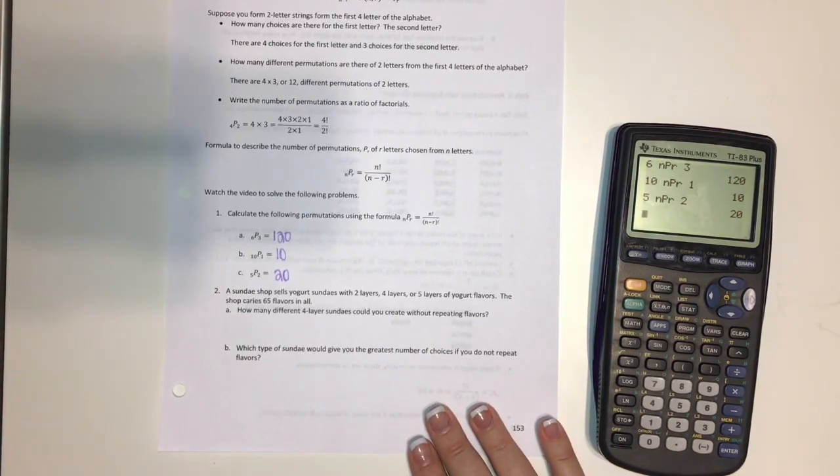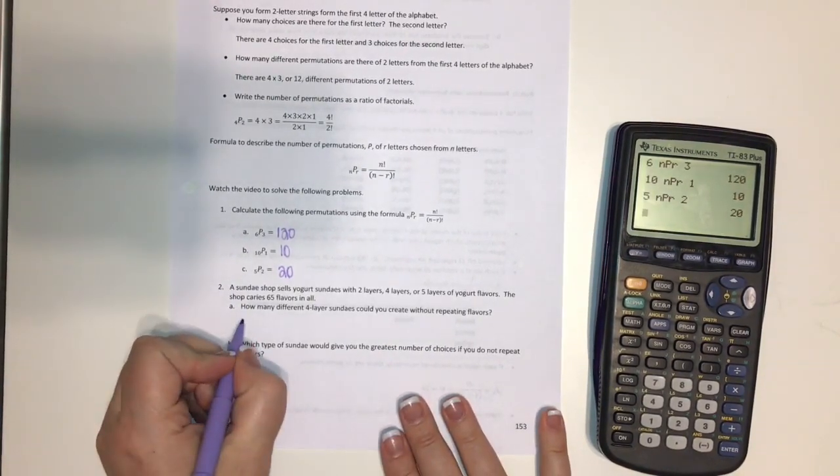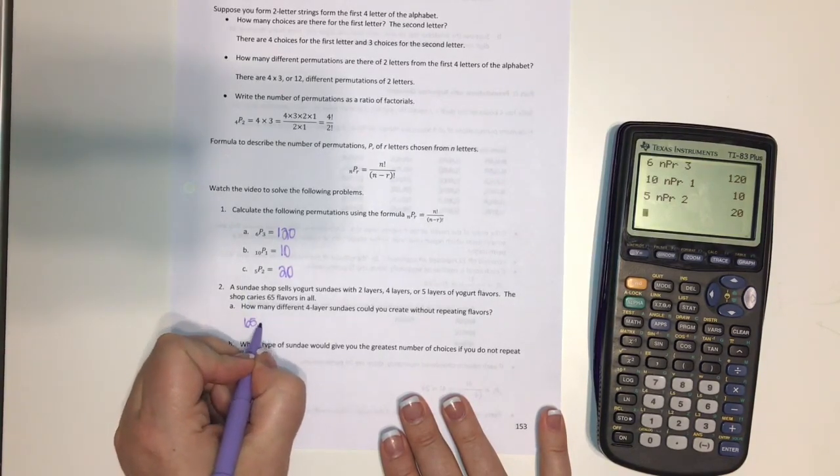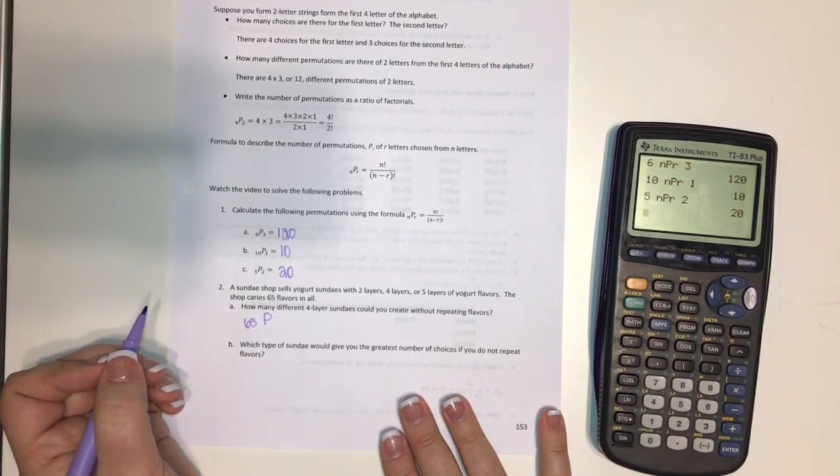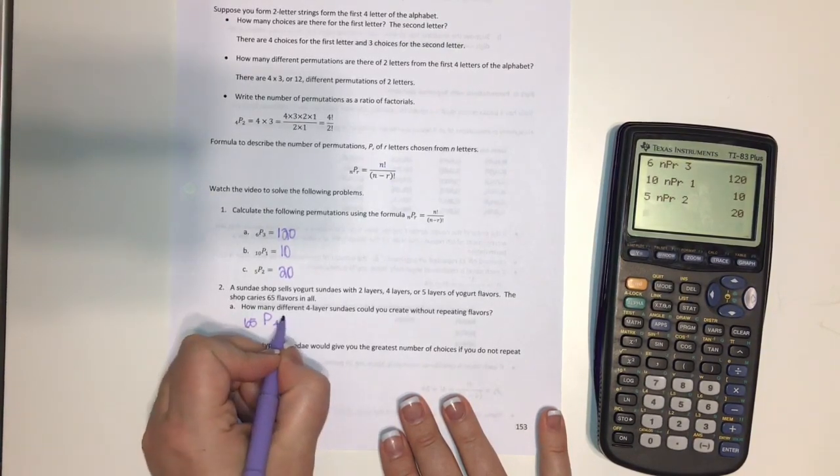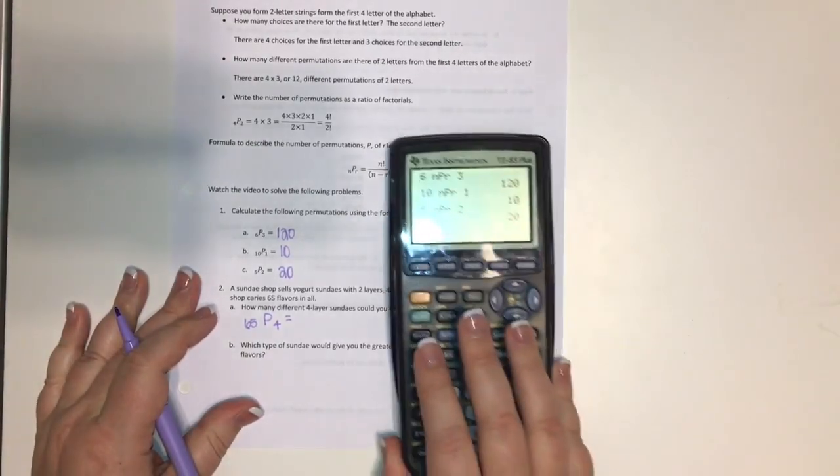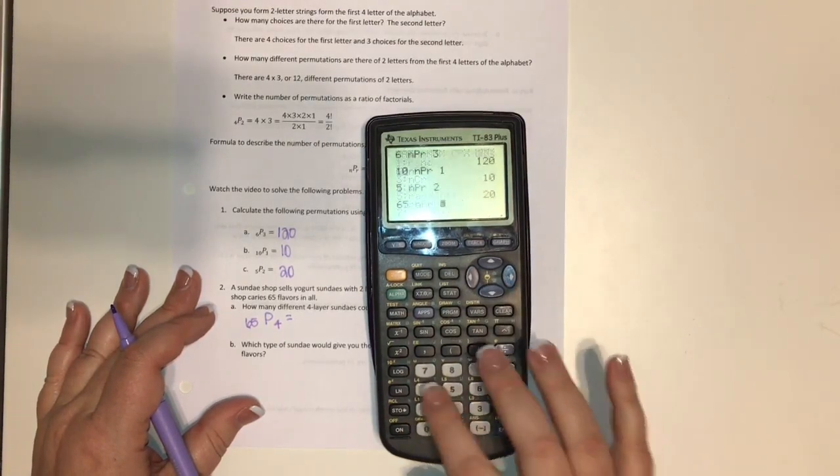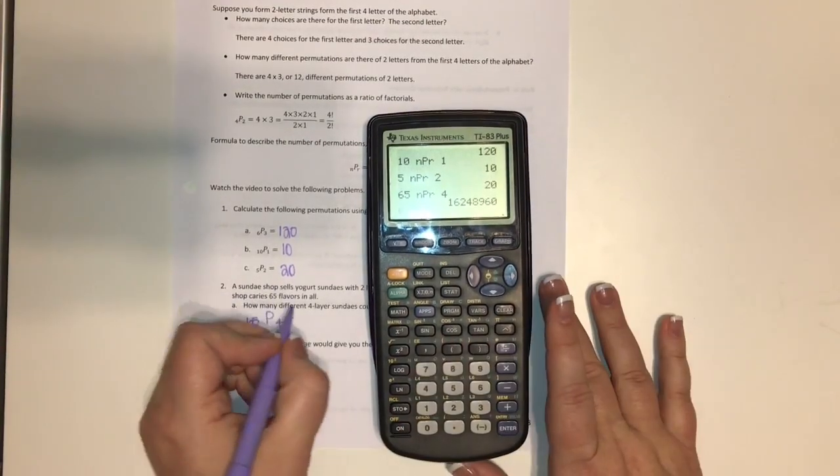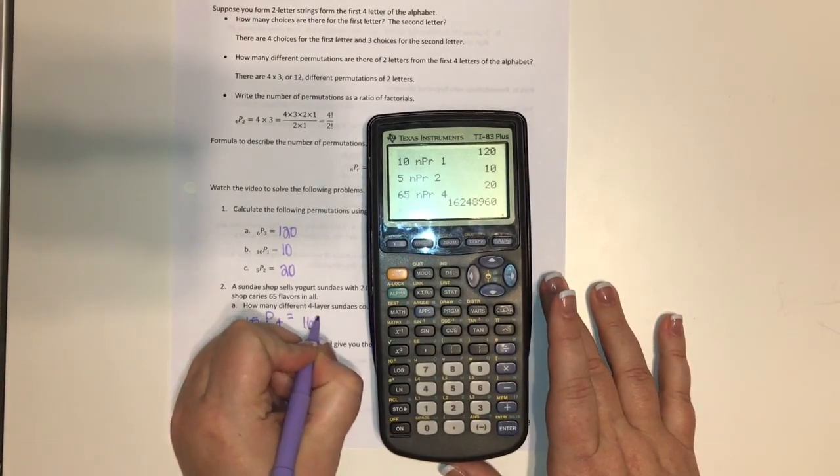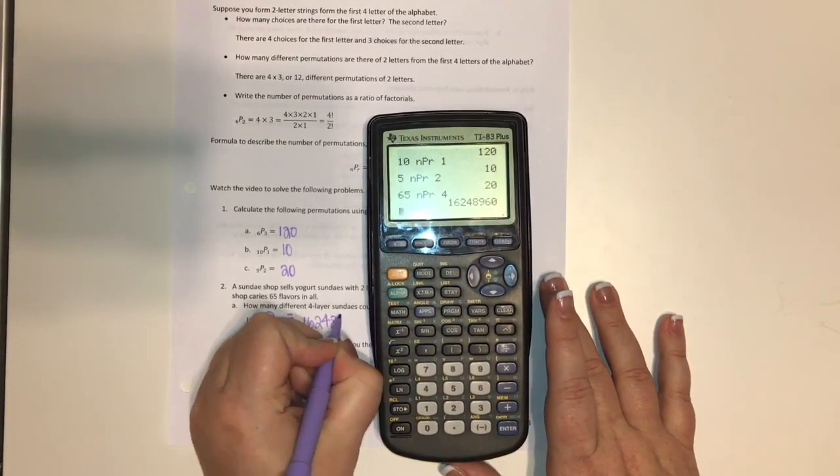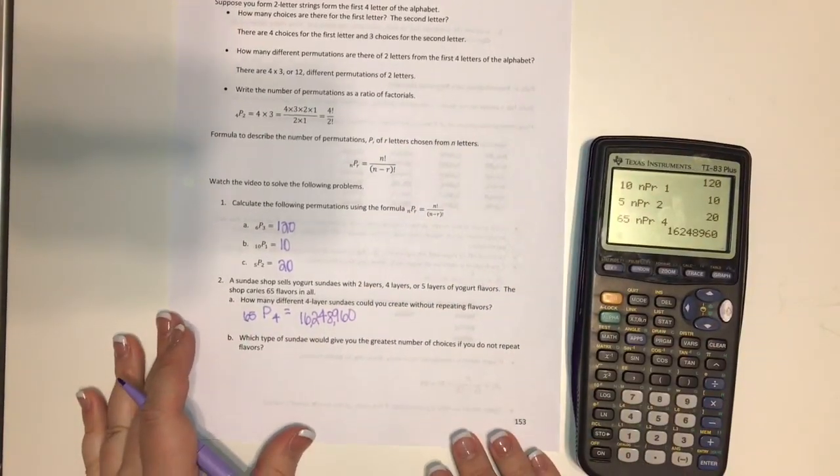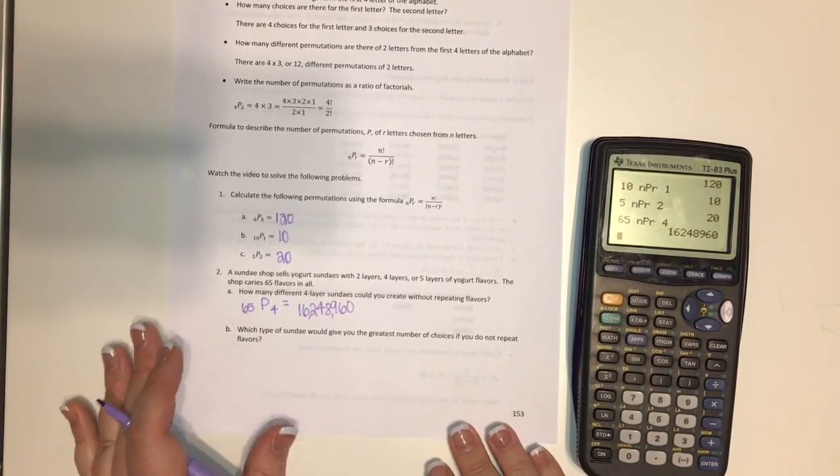So in permutation, it has no repeating. So we have 65, and it's a permutation, so we're going to do the P, and then we have four different options. So, or four that we're choosing rather. So we just stick this in our calculator. And there are a lot of options. Let's put our commas in there. There are 16,248,960 different options.